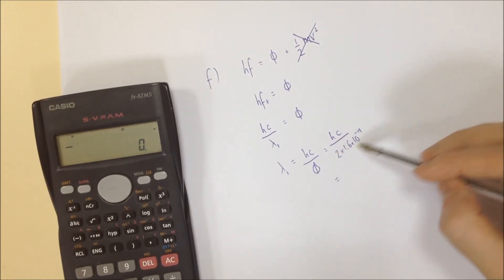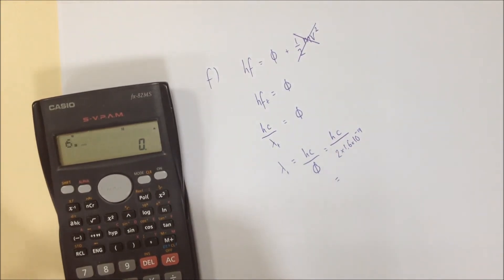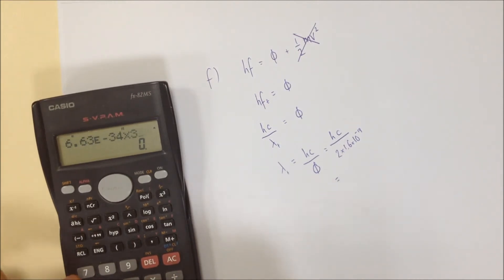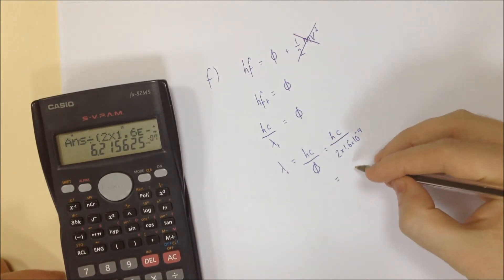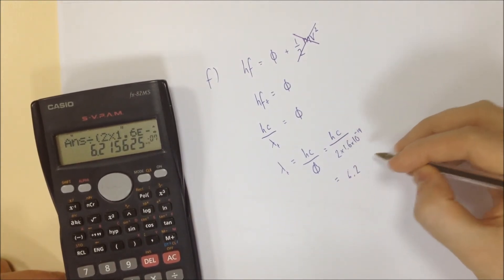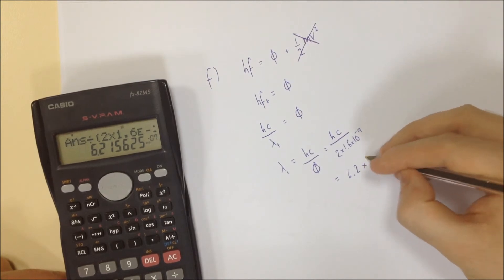So we're going to do 6.63 times 10 to the minus 34, multiplied by 3 times 10 to the 8, then divided by 2 times 1.6 times 10 to the minus 19. And that's going to give us our answer for our wavelength of 6.2, I'll leave it there, times 10 to the minus 7.